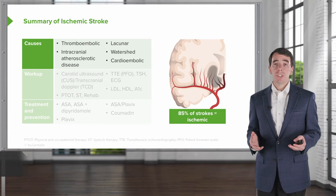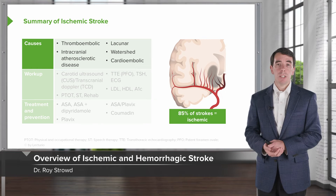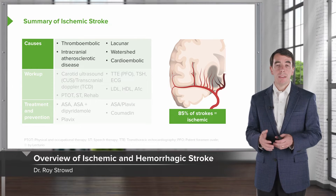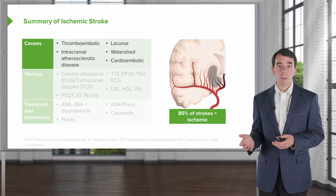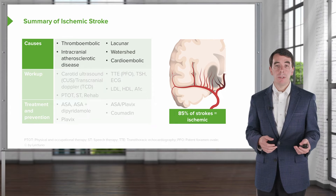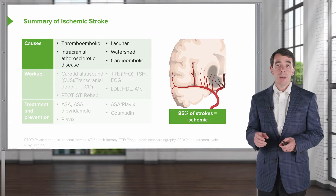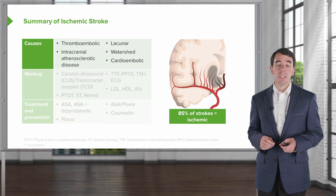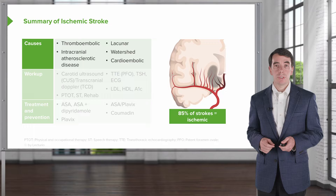Let's do a quick summary of ischemic stroke and hemorrhagic stroke. We're going to hit the highlights for the causes, the diagnostic workup, and treatment for each of these two major types of stroke. In subsequent lectures, we'll dive deep into each of these. Here, we're going to go through some tables that hit the highlights.